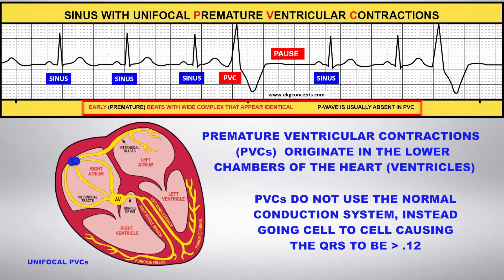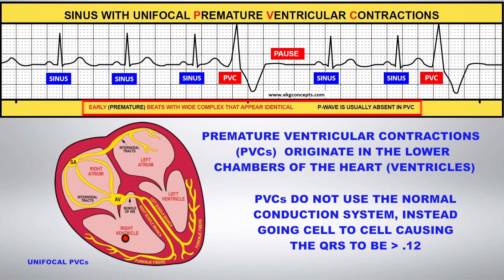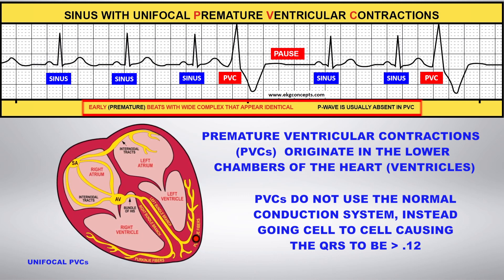PVCs do not use the normal conduction system, instead going cell to cell, causing the QRS to be greater than 0.12.